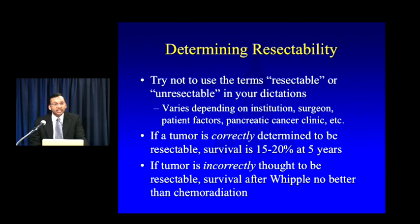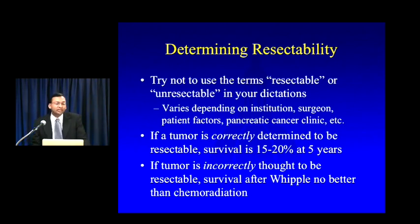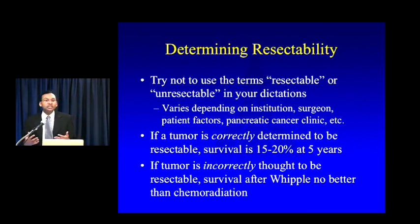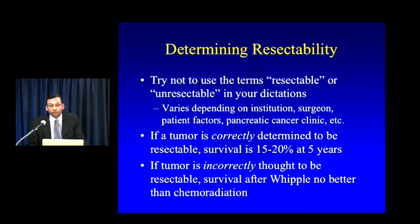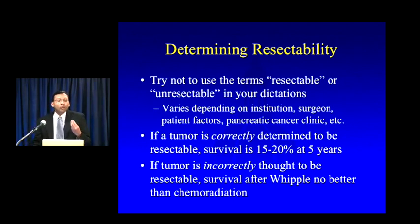Determining resectability is absolutely critical. If correctly determined to be resectable, survival after surgery is typically 15% to 20% at five years — still bad, but it gives the patient a chance. On the other hand, if a patient is incorrectly thought to be resectable but found unresectable at surgery due to an occult liver met or peritoneal carcinomatosis, they've essentially undergone a Whipple procedure for no reason. Survival after a Whipple in an incorrectly staged resectable case is no better than chemoradiation alone.